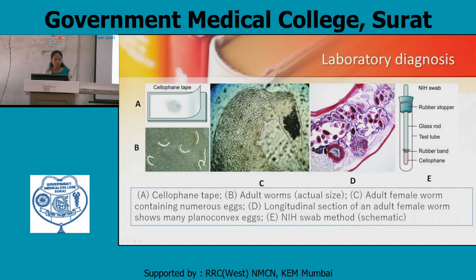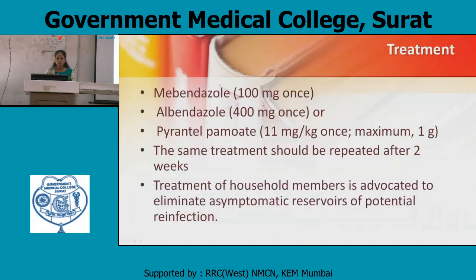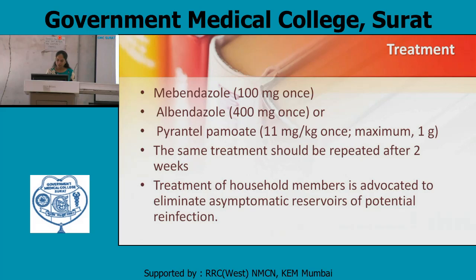Treatment: mebendazole 100 mg once. Albendazole 400 mg once, or pyrantel pamoate 11 mg per kg once, maximum 1 gram. The same treatment should be repeated after 2 weeks. Treatment of all household members is advocated to eliminate the asymptomatic reservoir of potential re-infections.